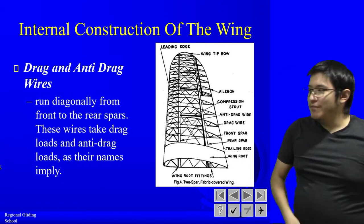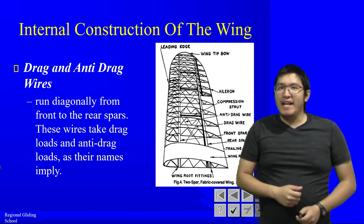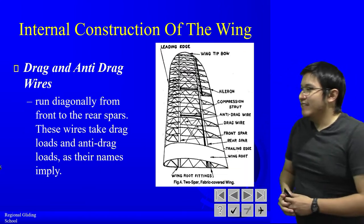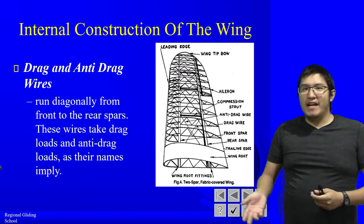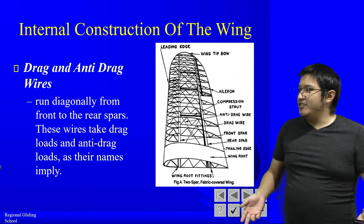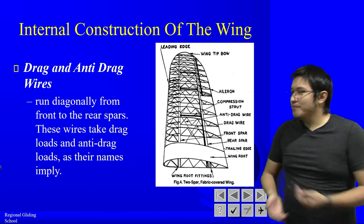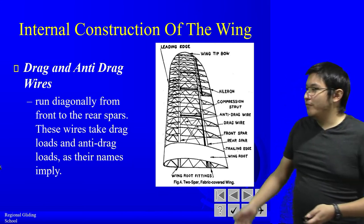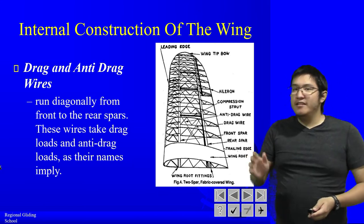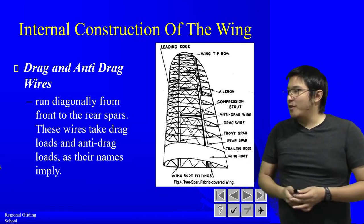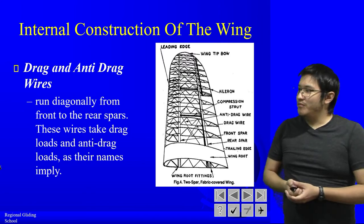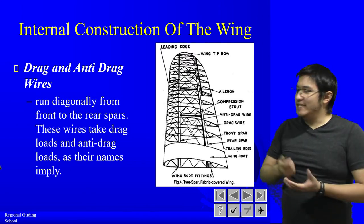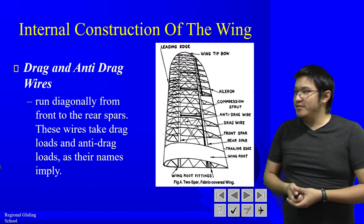Next up are drag or anti-drag wires. As the name suggests, they take drag loads and anti-drag loads. They run diagonally from the front to the rear spars. That is really all you need to know within the scope of this course.